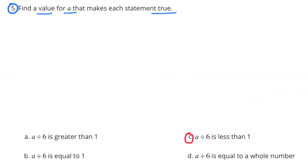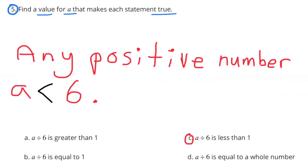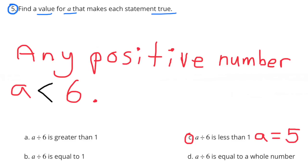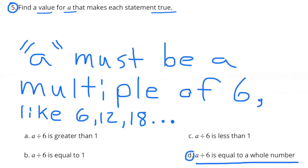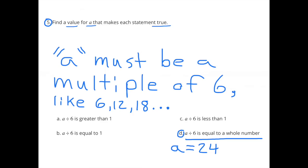C. A divided by 6 is less than 1. Any positive number A less than 6. So A can be any positive number less than 6. For example, A equals 5. D. A divided by 6 is equal to a whole number. A must be a multiple of 6 like 6, 12, or 18. Example, A equals 24.